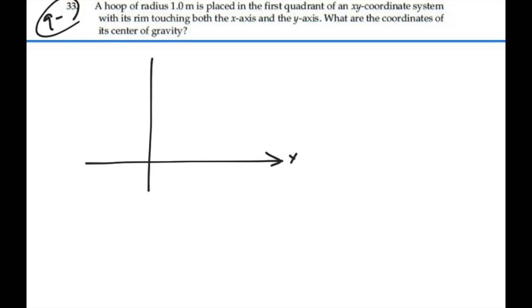So, here's the x-axis, y-axis. We have a hoop of radius 1 meter and hence the hoop is going to look something like this with a radius of 1 meter.